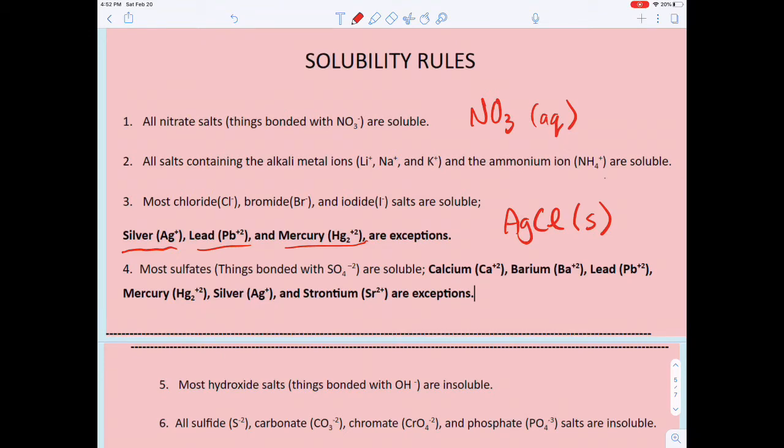Most sulfates are soluble. Calcium, barium, lead, mercury, silver, and strontium are exceptions. An example of that would be PbSO4—that would not be soluble because lead is not soluble when bonded with sulfate.